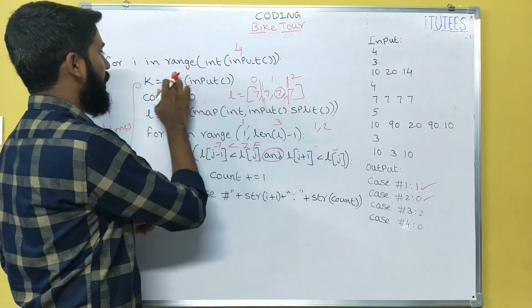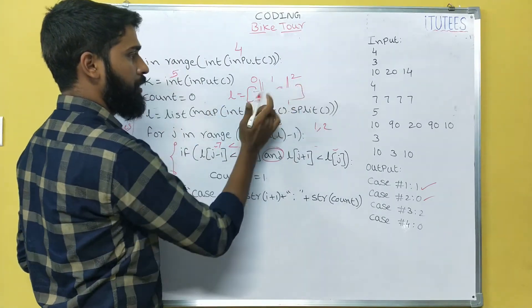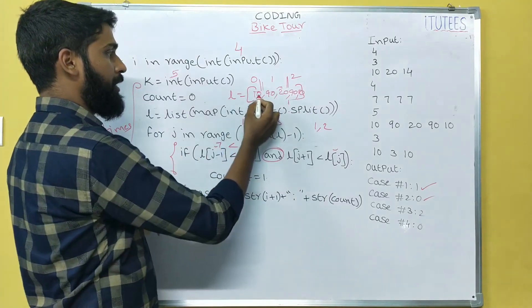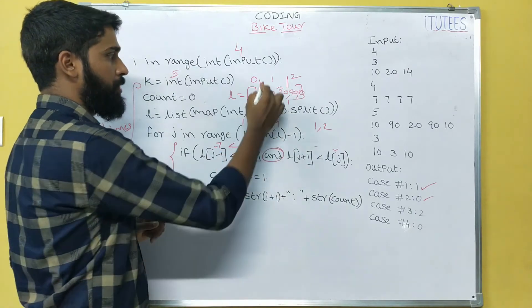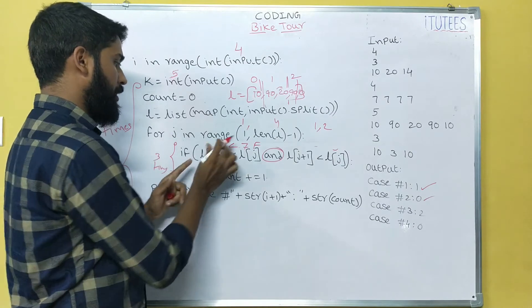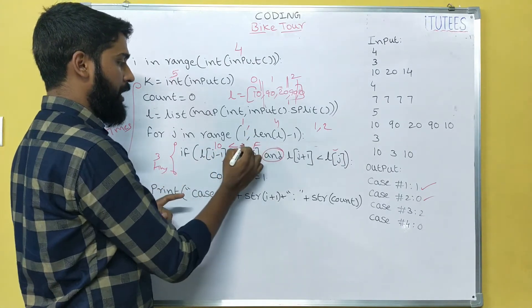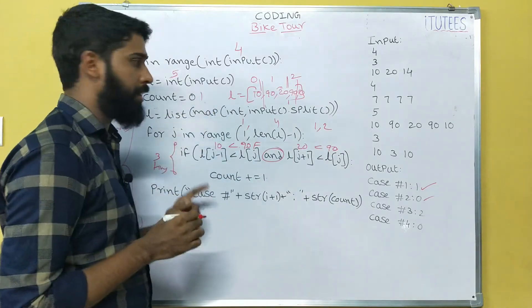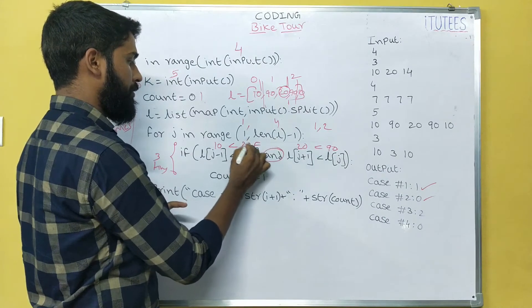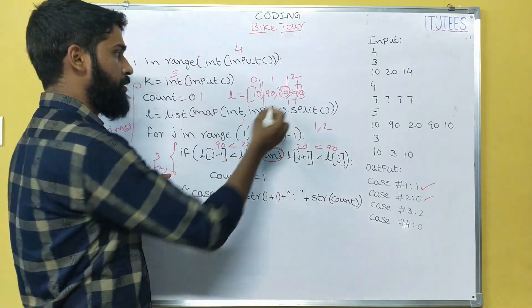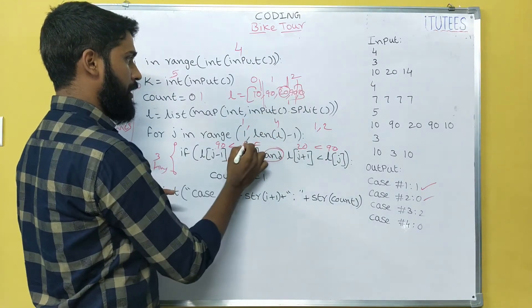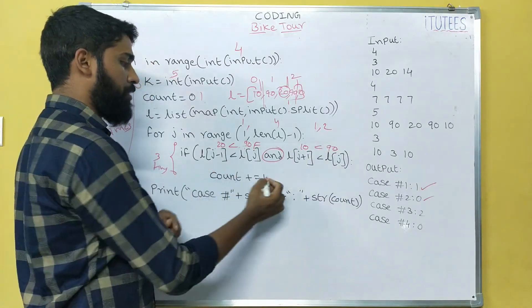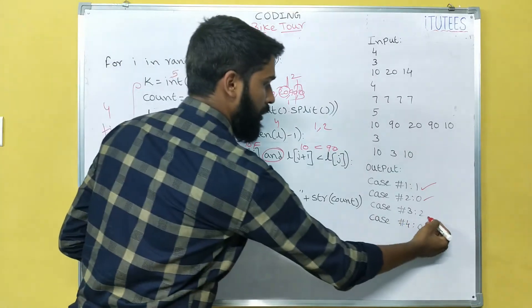In the next iteration, K becomes 5 and L becomes [10, 90, 20, 90, 10]. The length is 5, so J runs in range(1, 4) — indices 1, 2, 3. For J=1: L[0]=10 < L[1]=90, and L[2]=20 < 90 — both true, so count becomes 1. For J=2: L[1]=90 < L[2]=20 is false, skip. For J=3: L[2]=20 < L[3]=90 and L[4]=10 < 90 — both true, so count becomes 2. We print Case #3 = 2.